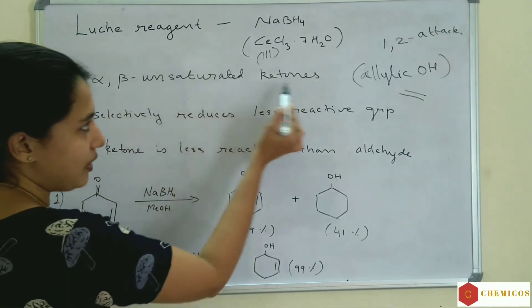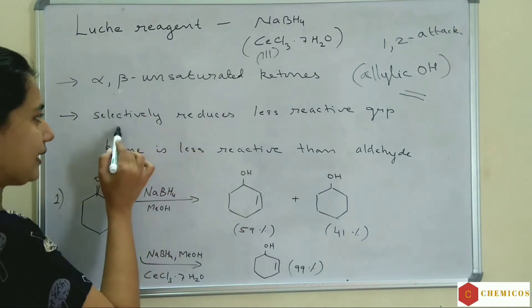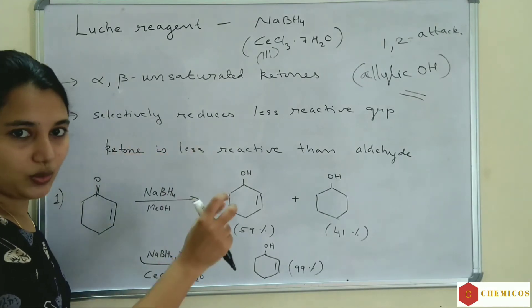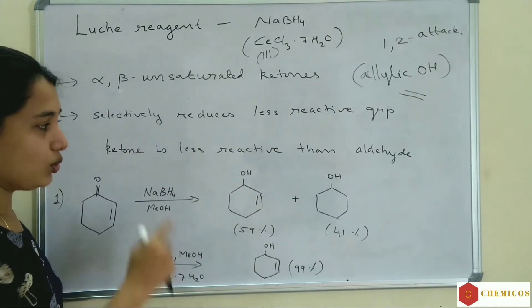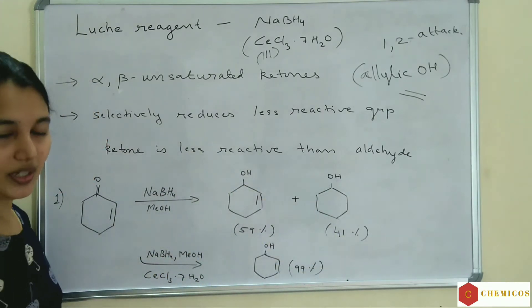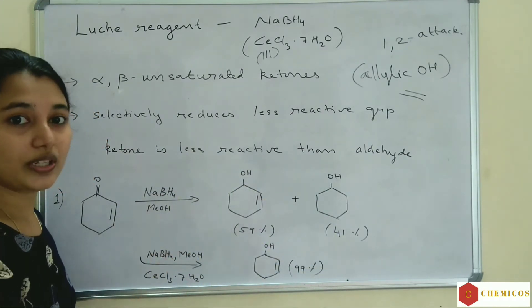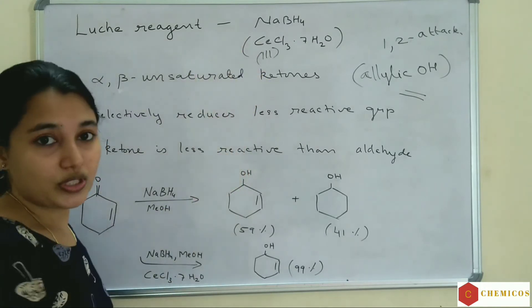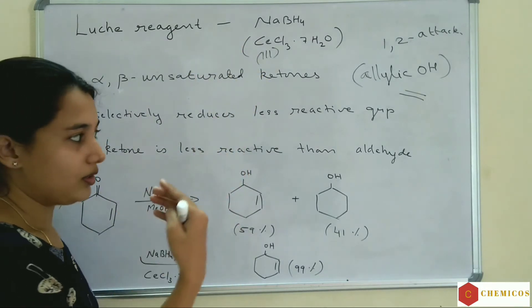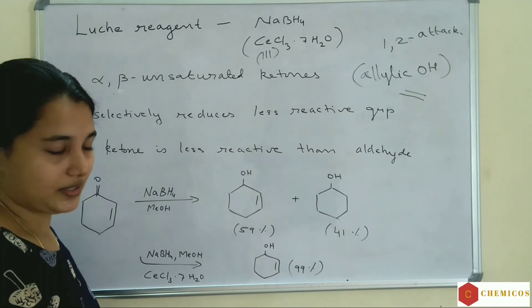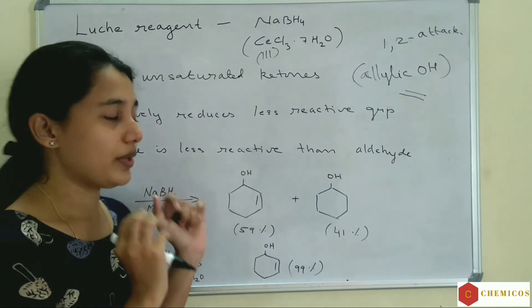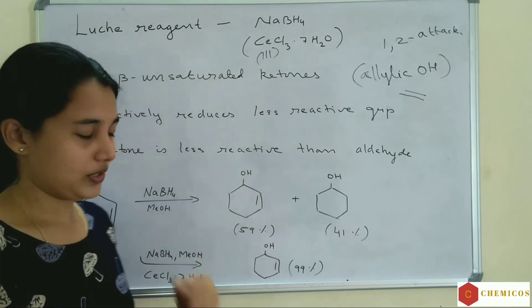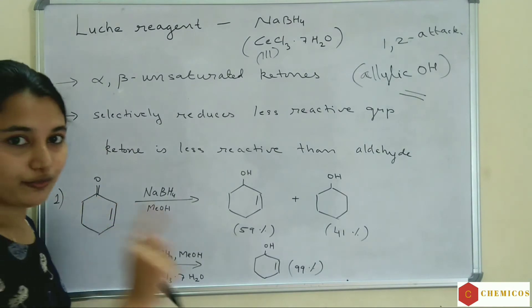So Luche reagent is sodium borohydride in the presence of cerium chloride. For alpha, beta-unsaturated ketones, Luche reagent selectively reduces the less reactive group. Ketone is less reactive than aldehyde, so Luche reagent will reduce the ketone first. If both ketone and aldehyde are present, ketone is reduced instead of aldehyde when Luche reagent is used. Only 1,2-attack occurs — not 1,4-attack.